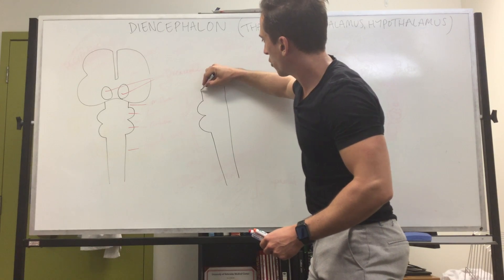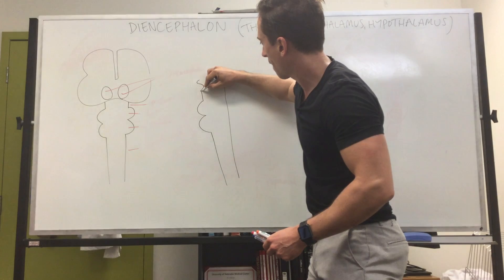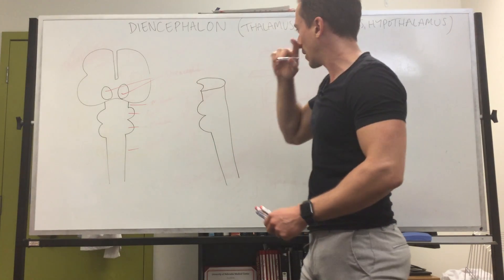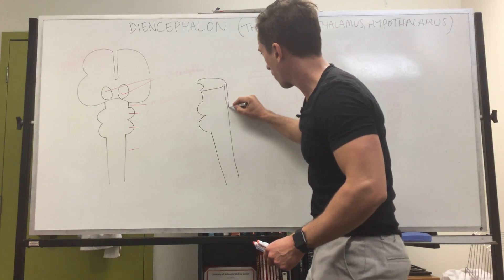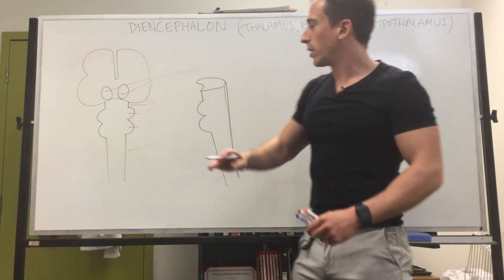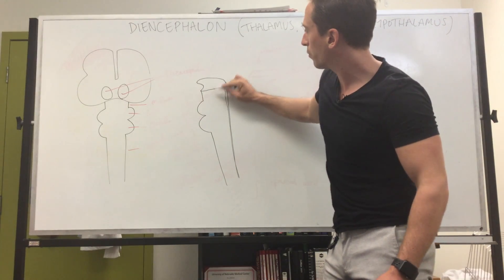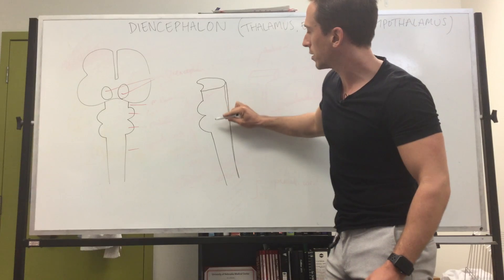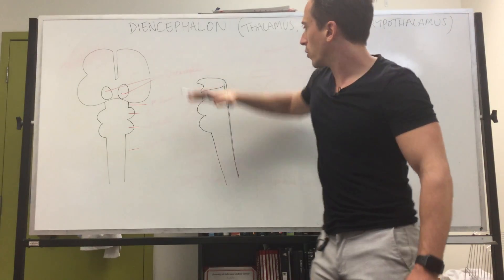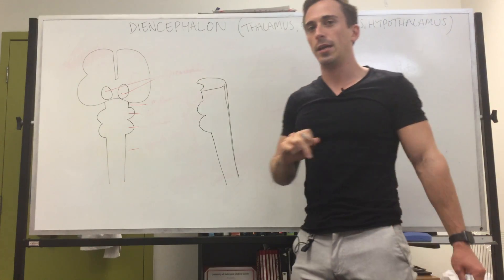Let's draw it three-dimensionally, or at least attempt to. So what we've got is we've cut the top off — we've got the midbrain here, pons, medulla, spinal cord — giving us a flat surface on top of the midbrain right here.